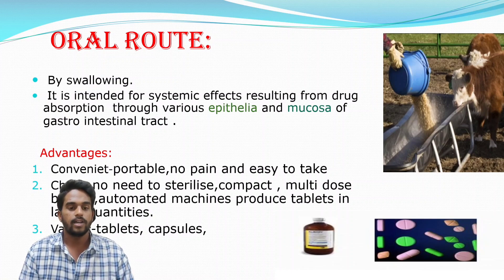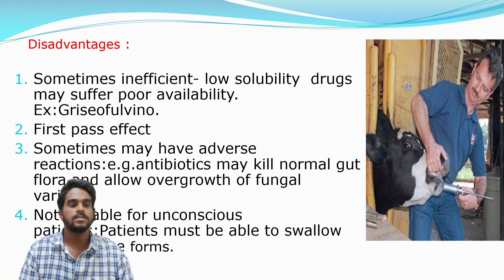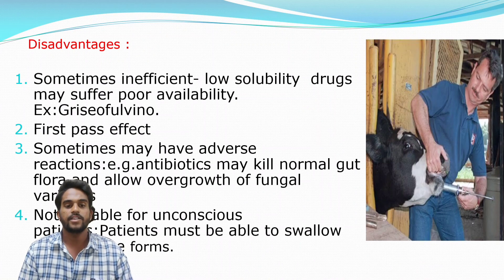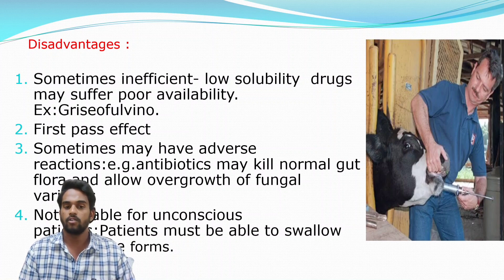Additional advantages of the oral route are that it is cheap, requires no needle and no need to sterilize, is compact, and allows multi-dose administration without syringes or needles. Disadvantages include sometimes being inefficient; low solubility drugs may have poor bioavailability; first-pass effect; and sometimes adverse reactions — for example, antibiotics may kill normal gut flora and allow overgrowth of fungal varieties.